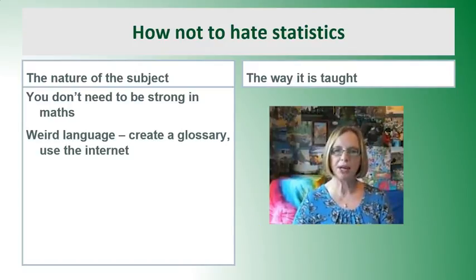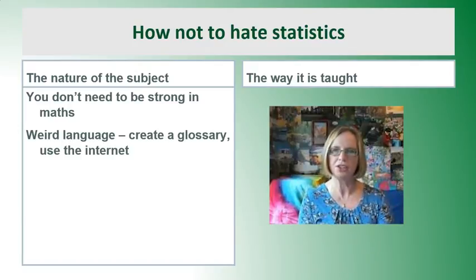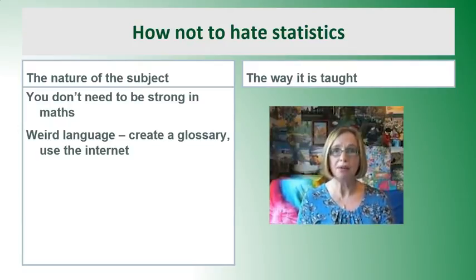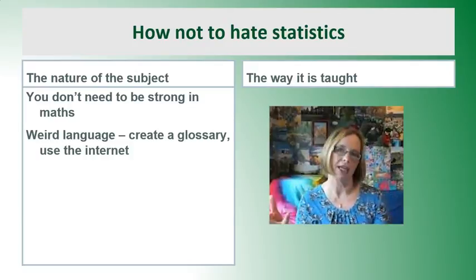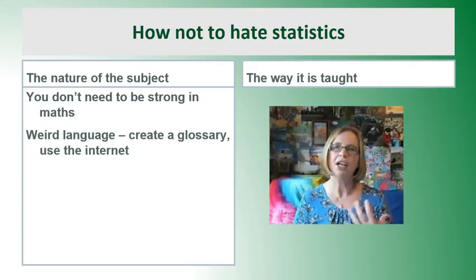There's definitely weird language in statistics. So what you need to do is make your own glossary — make a list of the words you're meeting, write them down, work out what they mean, and use the internet. Go to the search bar and put in 'what does sampling error mean,' wait for it to come up, and find explanations that work for you.